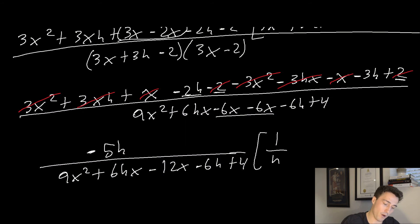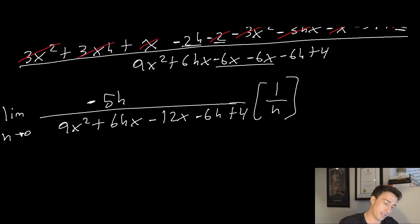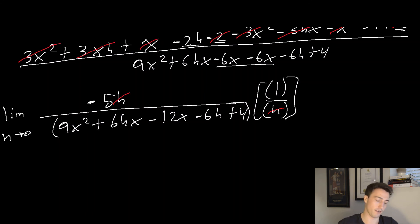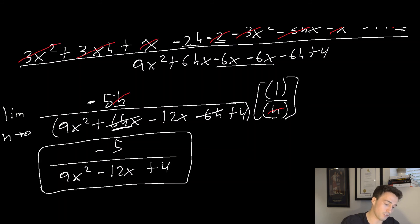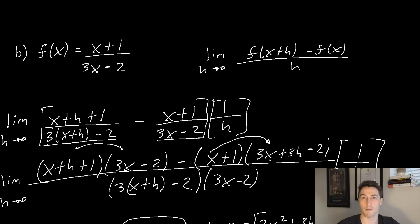The h in the numerator (−5h) and the 1/h cancel. Taking the limit as h → 0, all remaining h terms drop out: the result is −5 / (9x² − 12x + 4). This is the final answer — the slope of the tangent curve at any point on the original function f(x) = (x+1)/(3x−2).